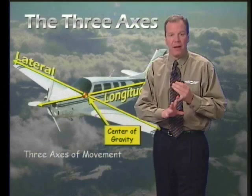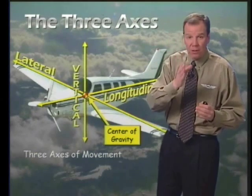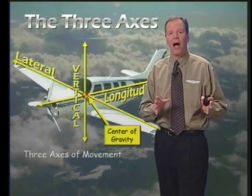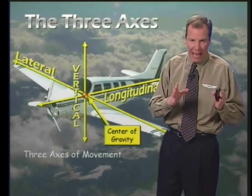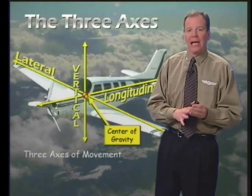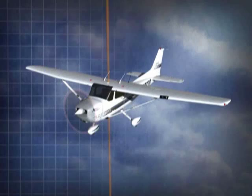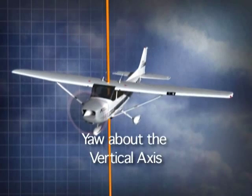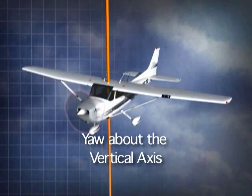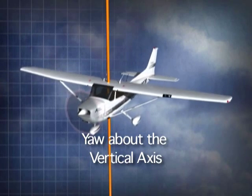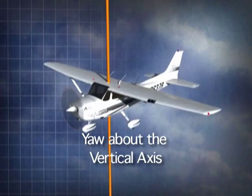Next, we have the vertical axis, also called the yaw axis or z-axis. It extends vertically right through the center of gravity on the aircraft, and its movement is caused by the rudder, which causes rotation about the vertical axis.